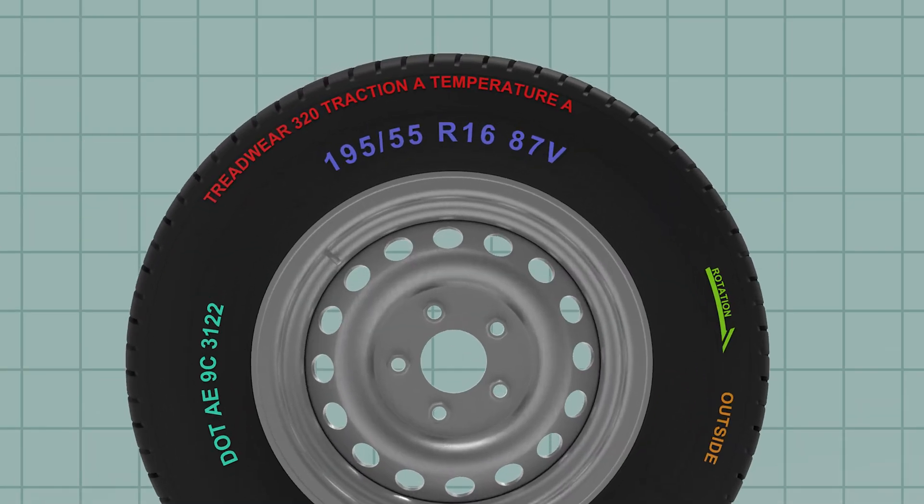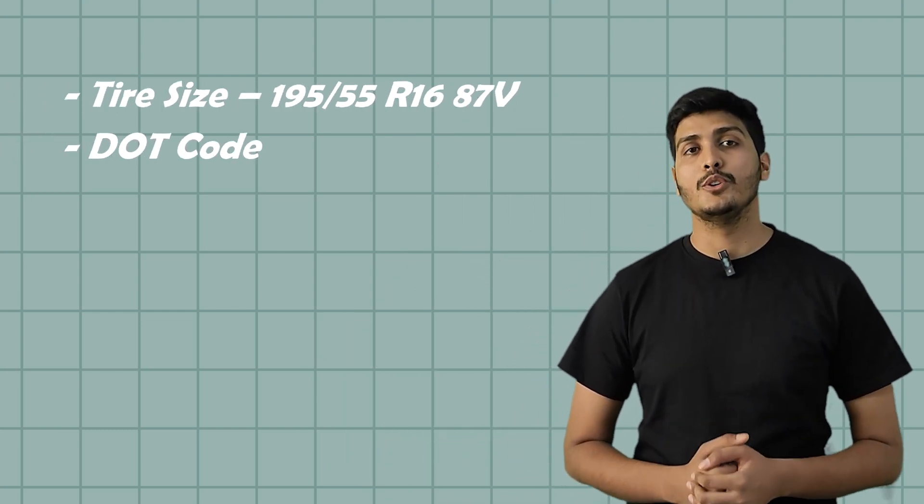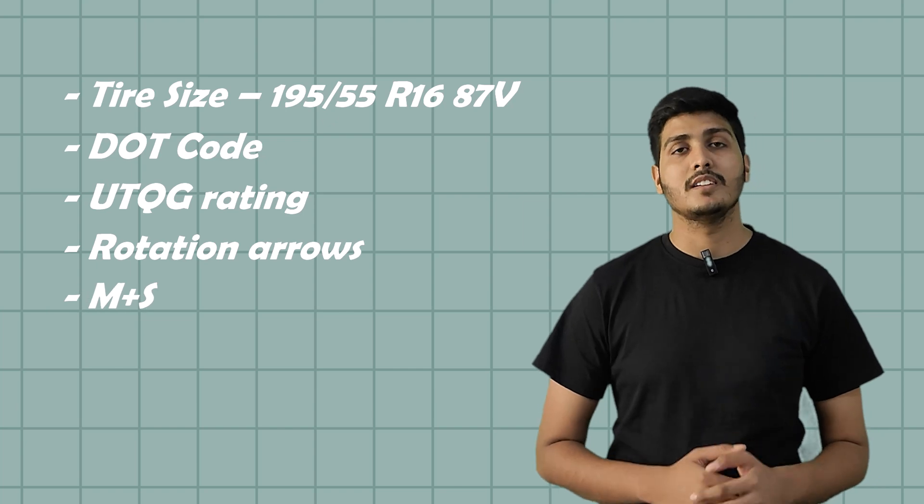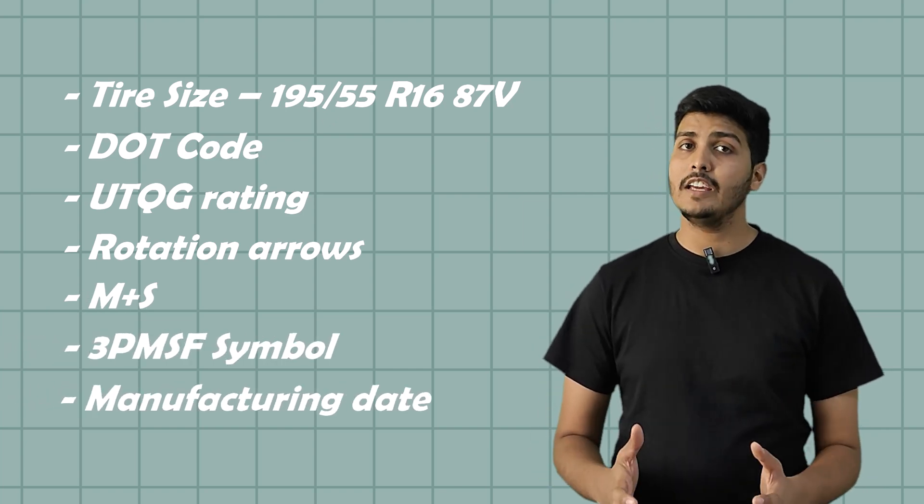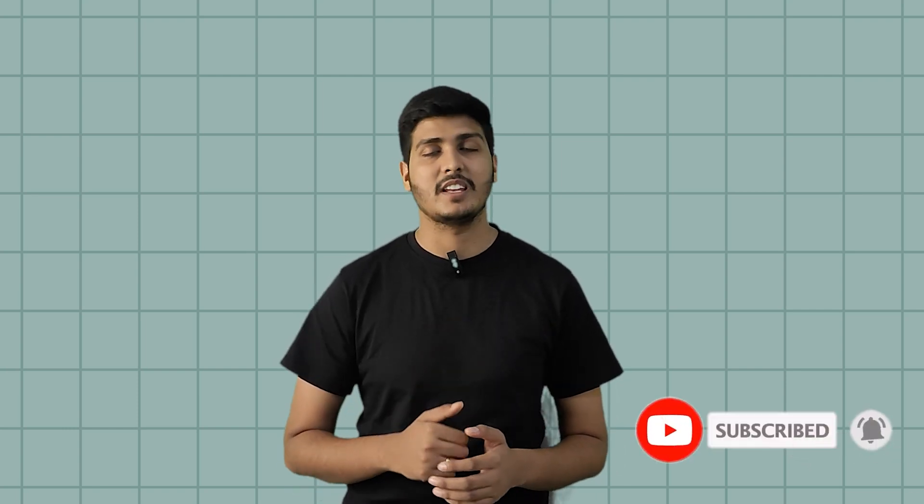You have probably seen something like 195, 55, R16, 87V written on your tire and maybe you had no idea what it actually means. Tires also have other markings you might have missed like DOT codes, UTQG rating, rotation arrows, M plus S, 3PMSF symbol and even the manufacturing date. In this video, I will tell you what all these markings mean in a simple way. So next time when you look at your tire, you will actually know what you are looking at. I know this video is going to be super helpful for you for understanding your tire better. So if you find it useful, do subscribe to my channel and hit the bell icon so that you never miss any updates. Now without spending much time, let's get started.